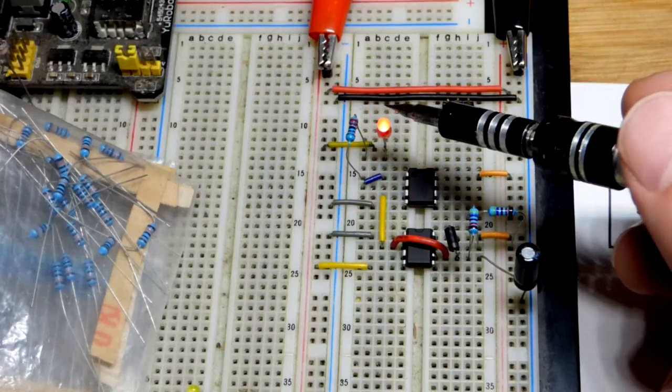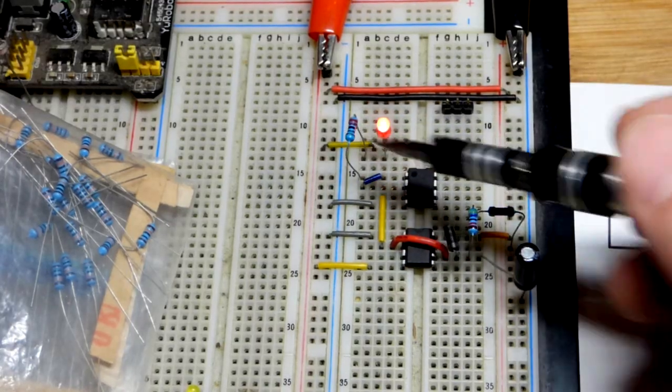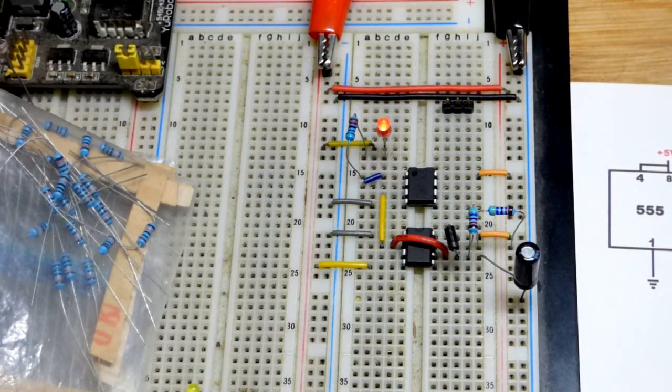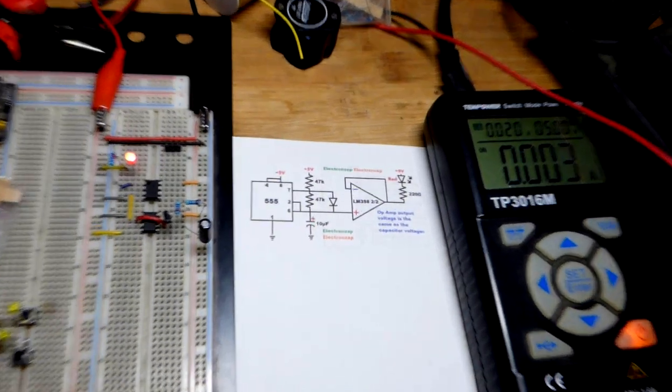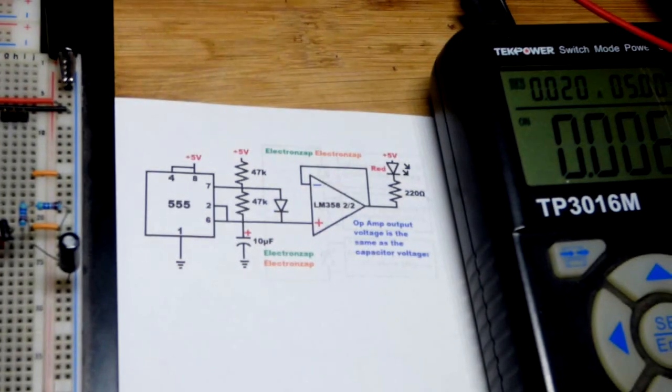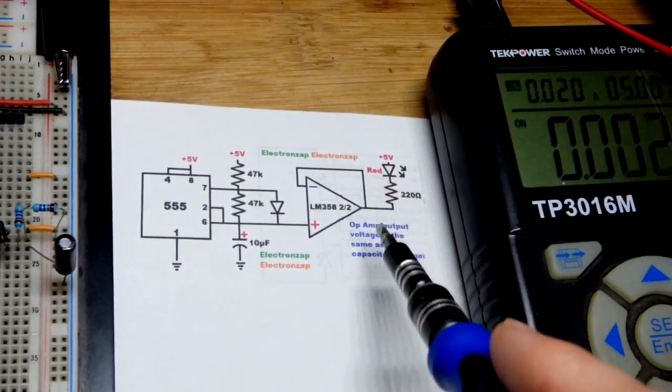Now here's a view of the schematic diagram for this circuit where the LED gets brighter and dimmer, not too quick but at a nice pace.